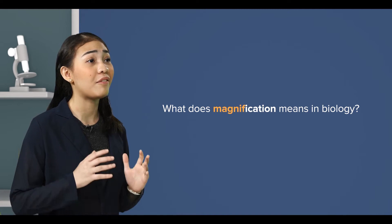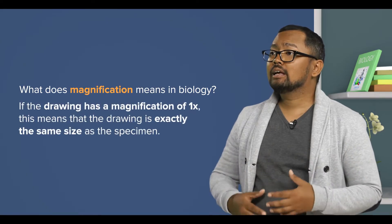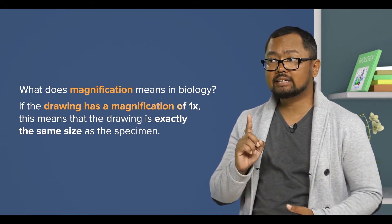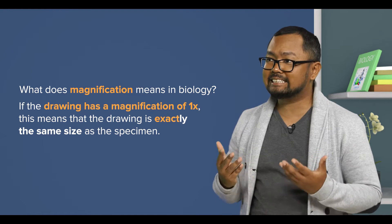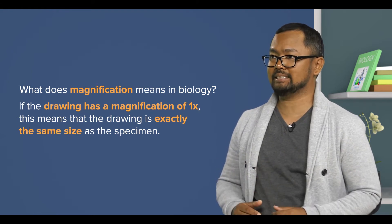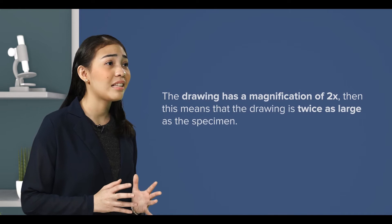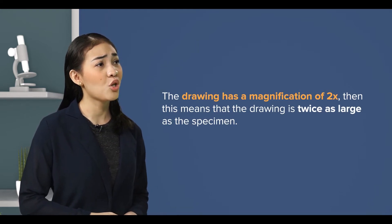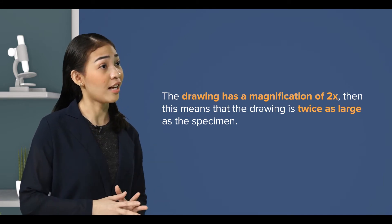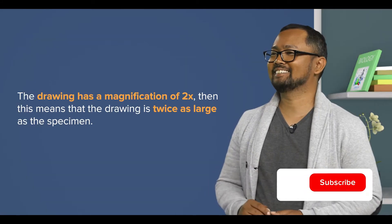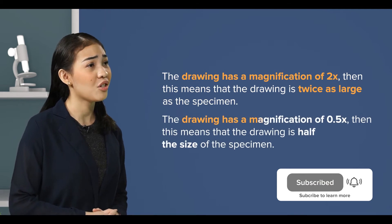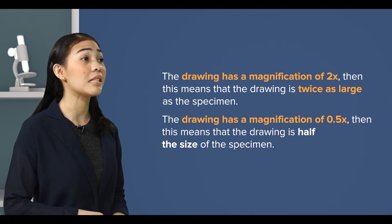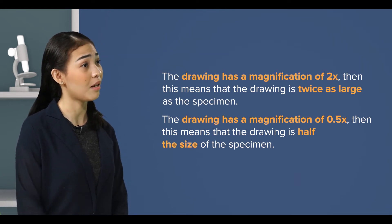But what exactly does magnification in biology mean? If we say that the drawing has a magnification of one times, this means that the drawing is exactly the same size as the specimen. So if we say that the drawing has a magnification of two times, then this means that the drawing is twice as large as the specimen. That is correct. So if the drawing has a magnification of 0.5 times, then this means that the drawing is half the size of the specimen.